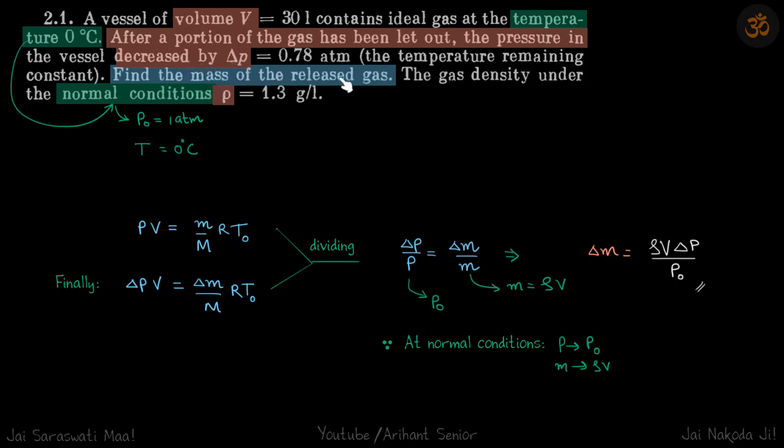We need to find the mass of the released gas. It's given that temperature is zero degrees Celsius and remains constant. In normal conditions, rho is given, so we make an assumption that the initial condition is the normal condition.